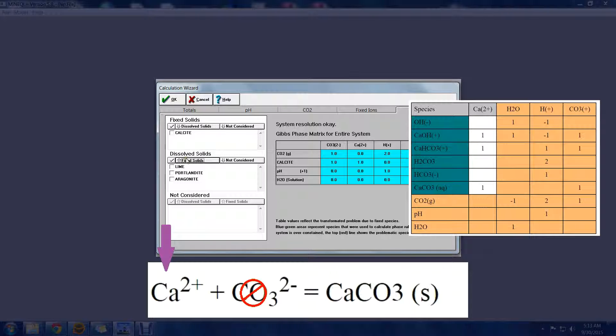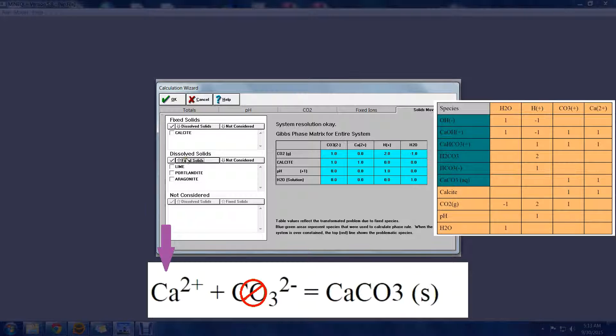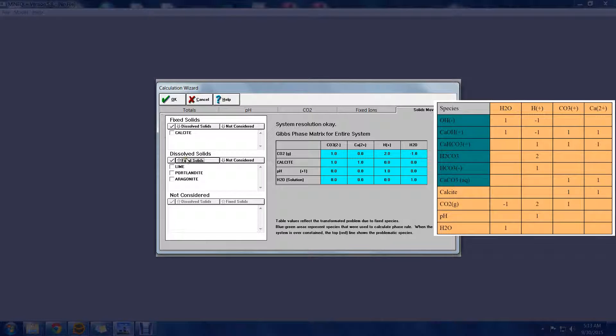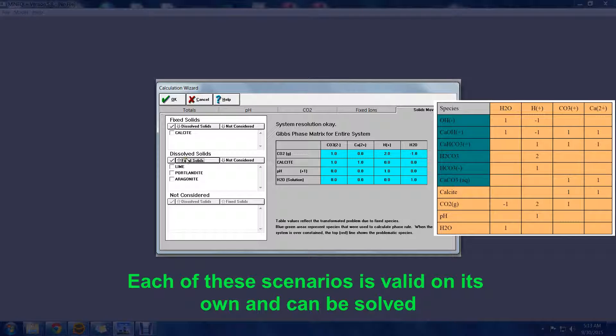The tableau reduces in scope once again, and our problem has zero equations and zero unknowns. But it is not over-constrained. Any of these previous scenarios for fixed species represent valid systems for solving a problem. As long as the system is not over-constrained, Minicube Plus will be able to arrive at a solution.